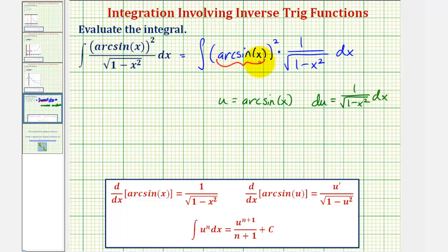So notice how this is u and all of this is equal to du. So if we write this in terms of u, we'd have the integral of u to the second and then just du.